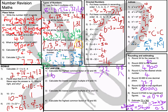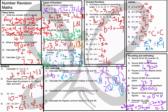Using a factor tree: 32 splits into 8 and 4; 48 splits into 8 and 6, which splits into 2 and 3. You can see that 8 is common in both and 2 is common in both, so 8 times 2 gives 16. That's where 16 comes from — it's the numbers common in both factor trees.